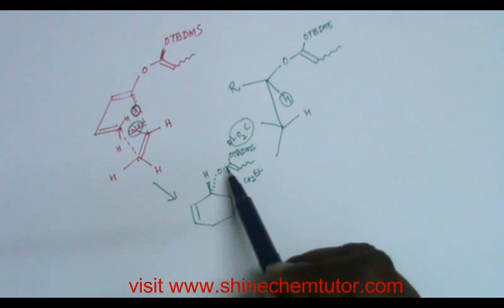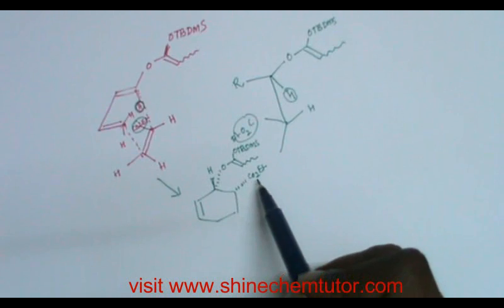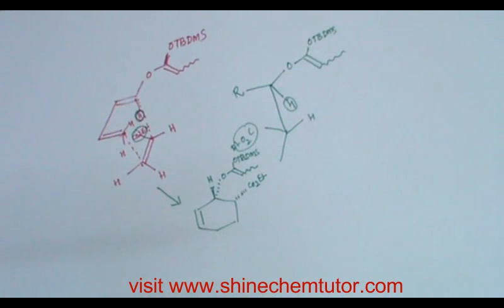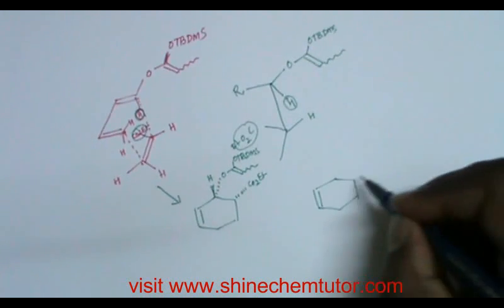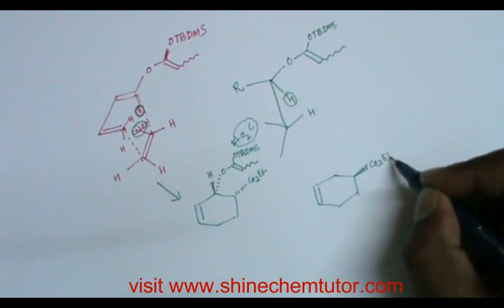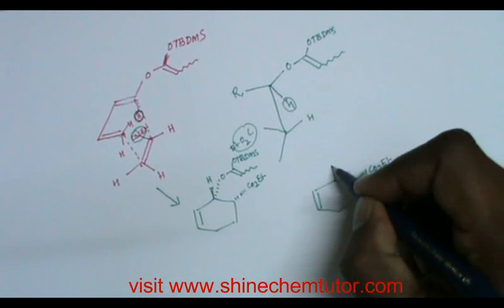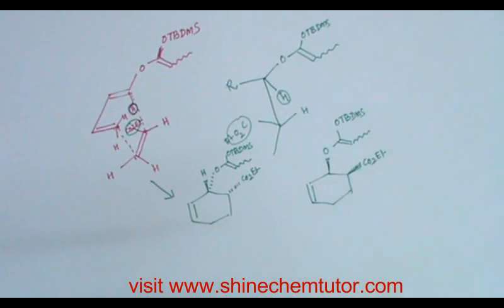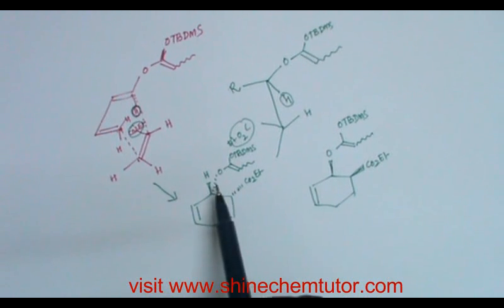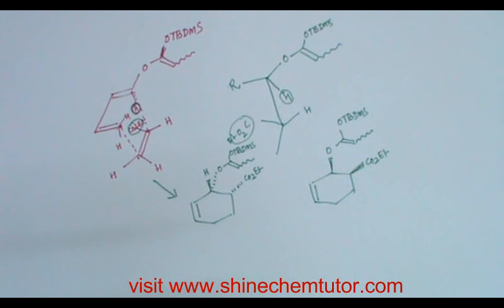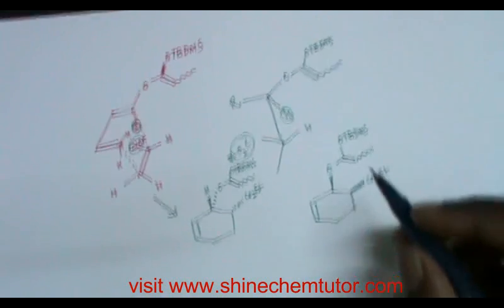That means the vinyl group and CO₂Et should be cis to each other. Thin lines and thick lines indicate the stereochemistry of the two substituents. Note that this is not asymmetric synthesis, so you will not get one stereoisomer selectively.